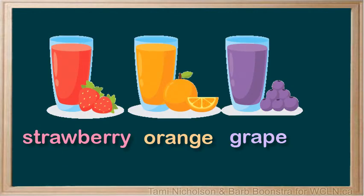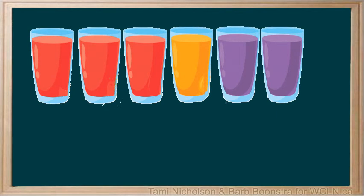Let's look at an example of a three-term ratio. You are preparing fruit punch out of strawberry, orange, and grape juices. You will use three glasses of strawberry juice, one glass of orange juice, and two glasses of grape juice in your punch. To write this as a three-term ratio, strawberry juice is listed first, so you will write three.